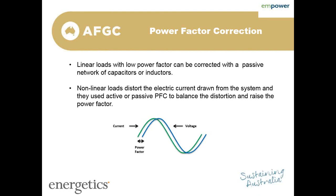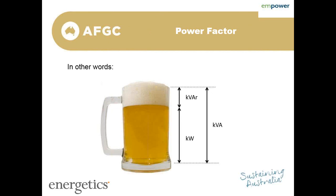In other words, in case that was a bit too technical, you can imagine this using a beer analogy. You buy a beer at the bar and you get the beer itself, which is the kilowatts. You also get the foam or head of the beer, which is the KVARs. You pay for the whole lot, but you'd rather have more beer than foam. So we look to minimize that foam section and maximize the beer in our glass.